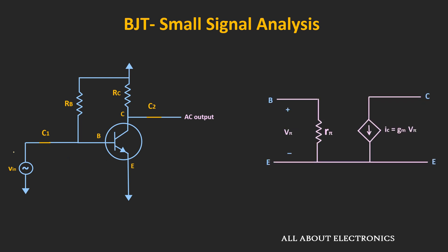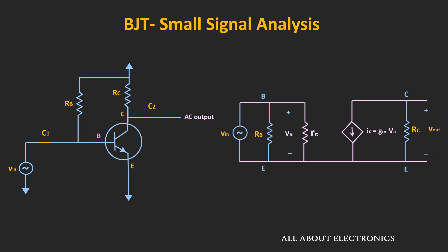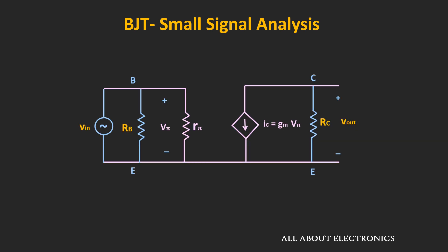The input signal is applied between the base and the emitter terminal, so we represent the input voltage between these two terminals. One terminal of resistor Rb is connected to the base terminal while the second terminal is connected to the AC ground. The emitter terminal is also grounded, so effectively Rb is connected between the base and emitter. Similarly, the collector resistor Rc is connected between the collector and emitter terminal. This is the AC equivalent representation of the common emitter fixed bias configuration, from which we can find the voltage gain, input impedance, and output impedance.